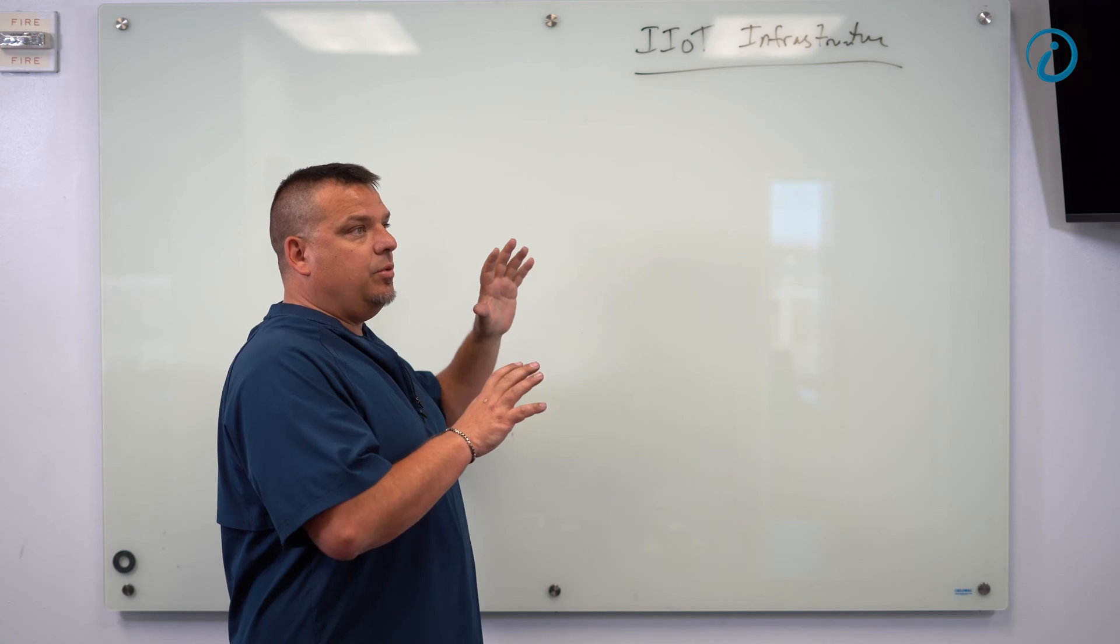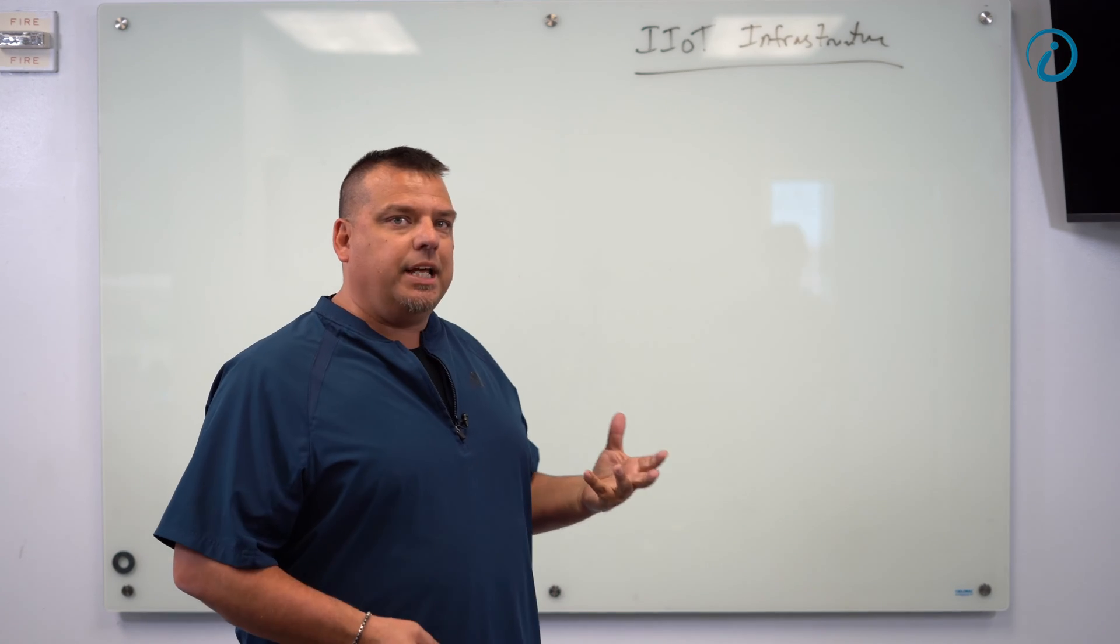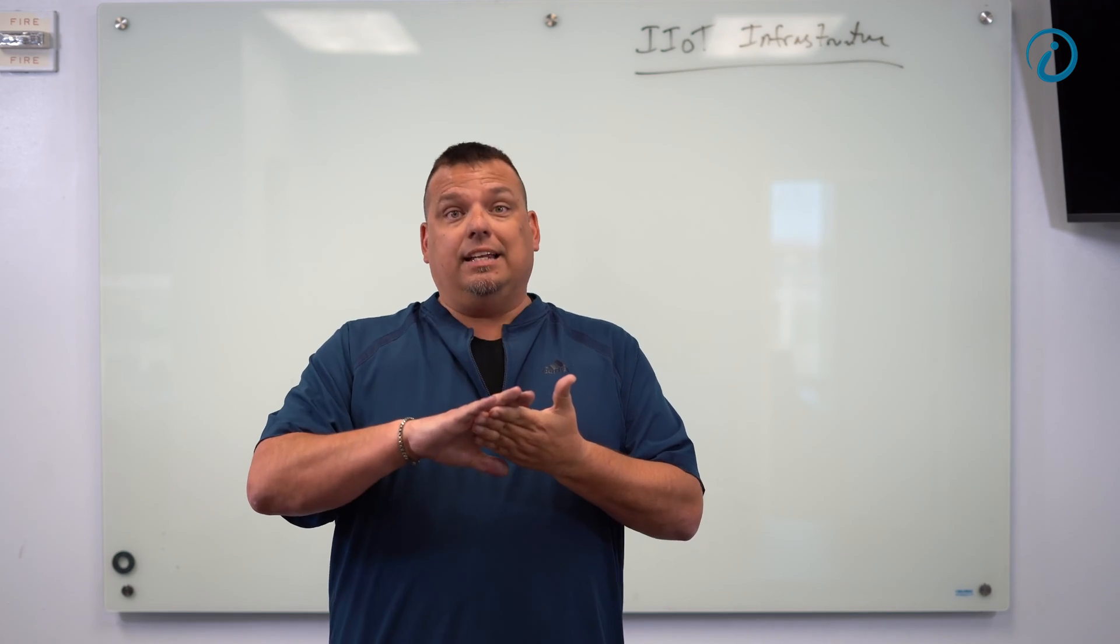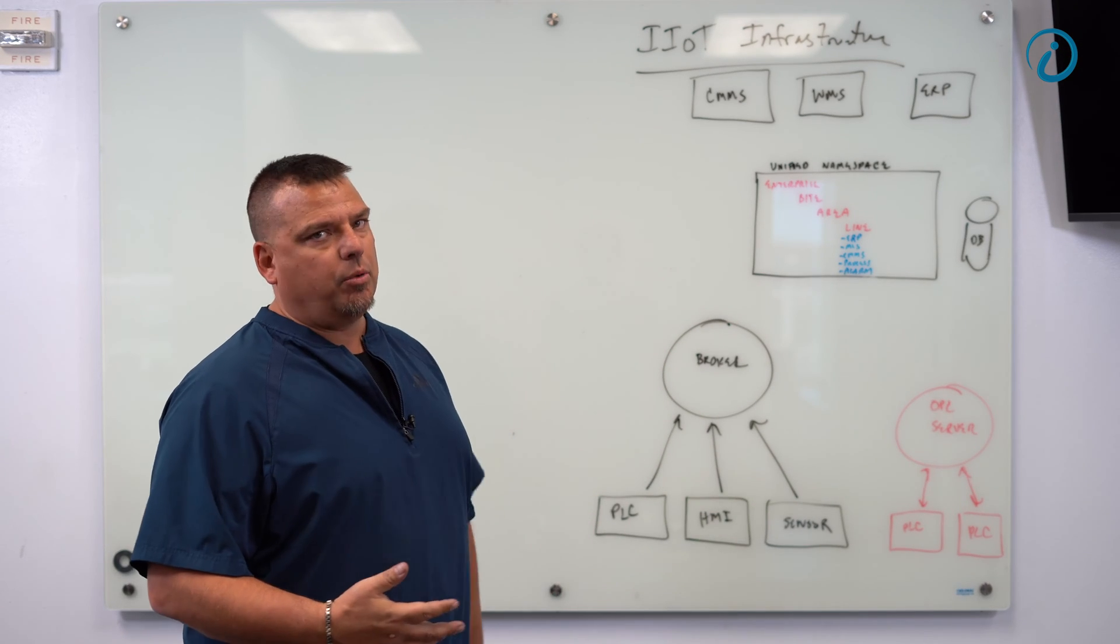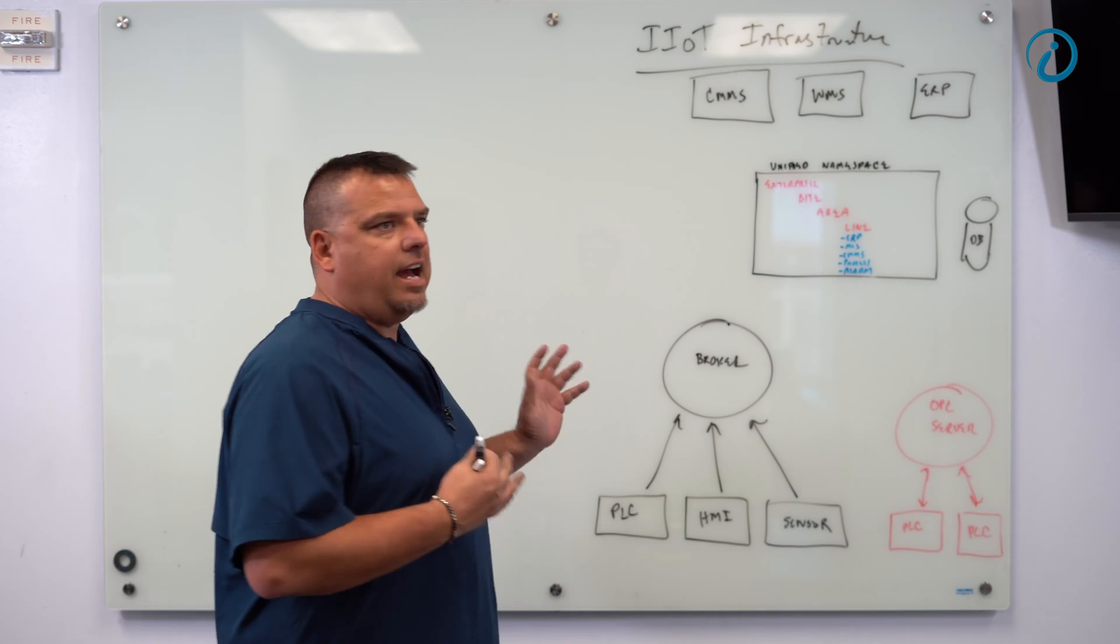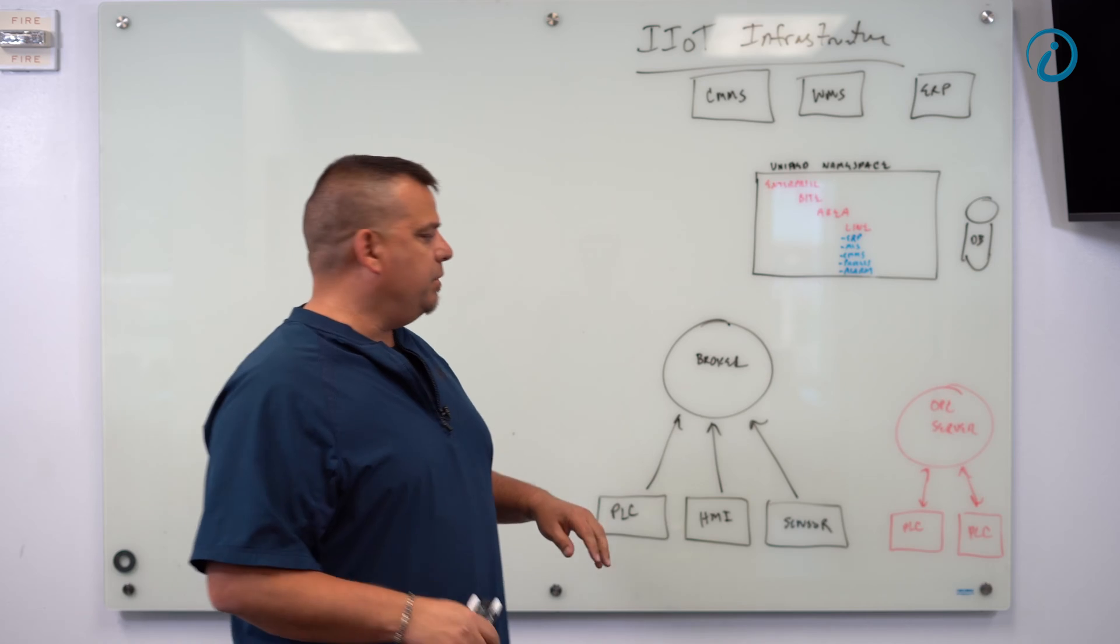Our goal is, when we talk about an IIoT infrastructure, this is the infrastructure we have to put in place in order to meet that goal of putting the data and information that people need in their hands when they need it and where they need it. This is a typical IIoT infrastructure for a project that we work on. This is not all inclusive, it's just typical. I'm just going to go over some of the components.